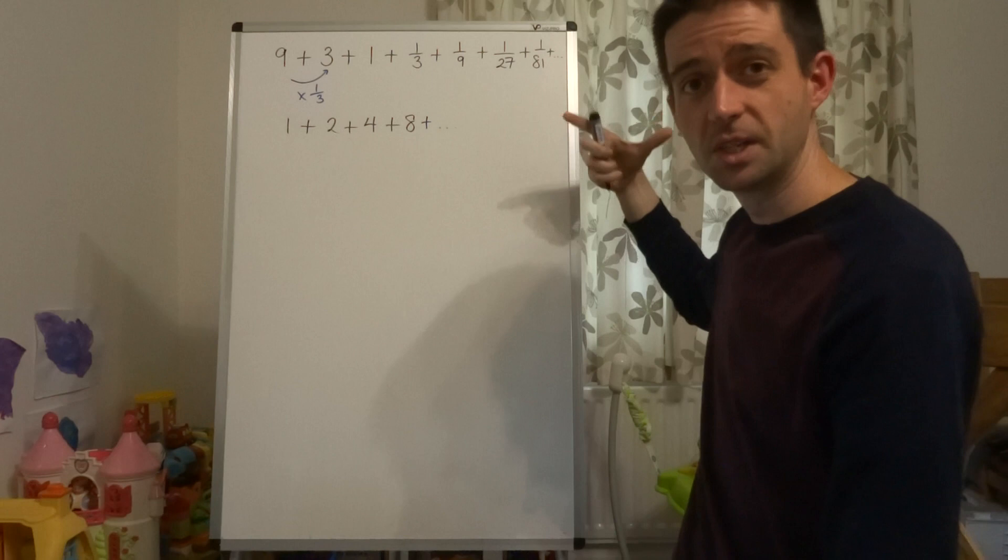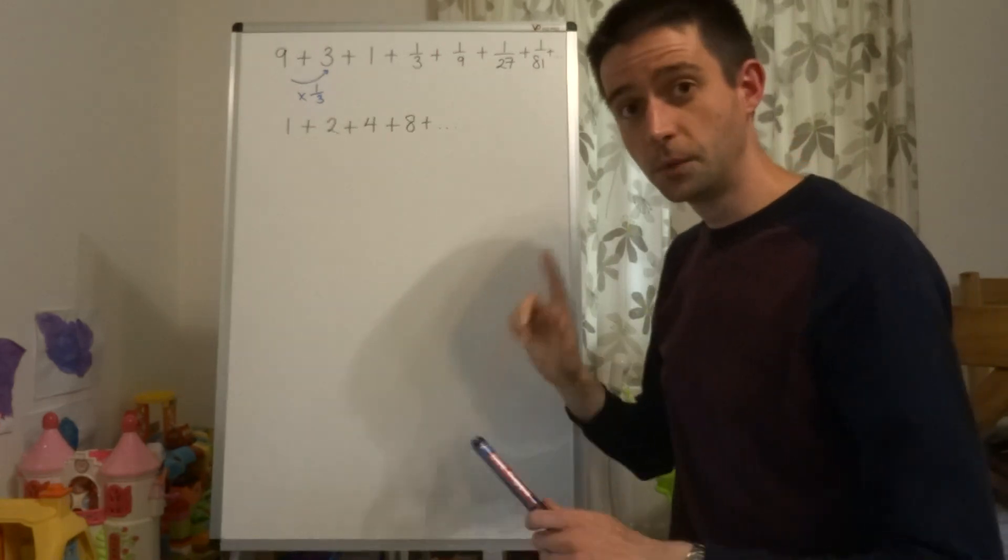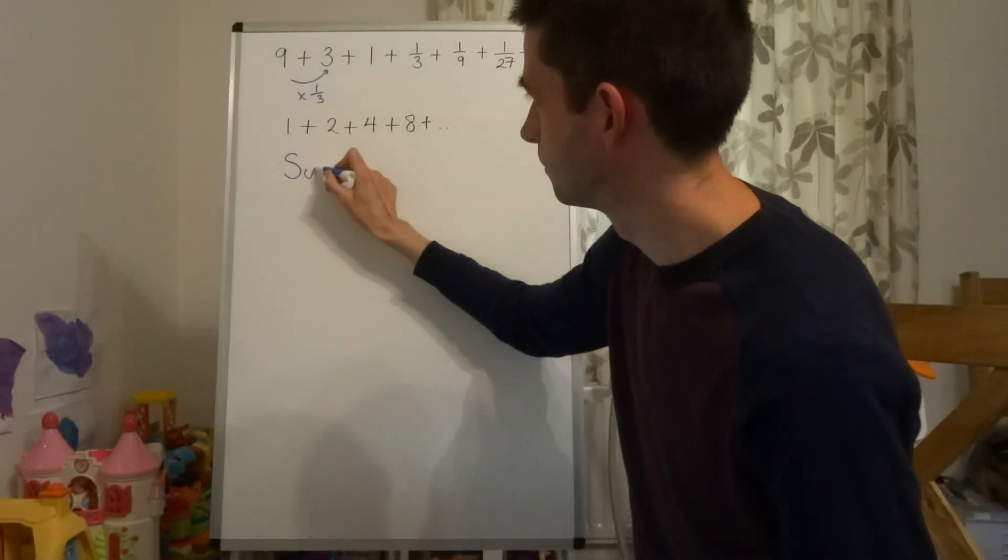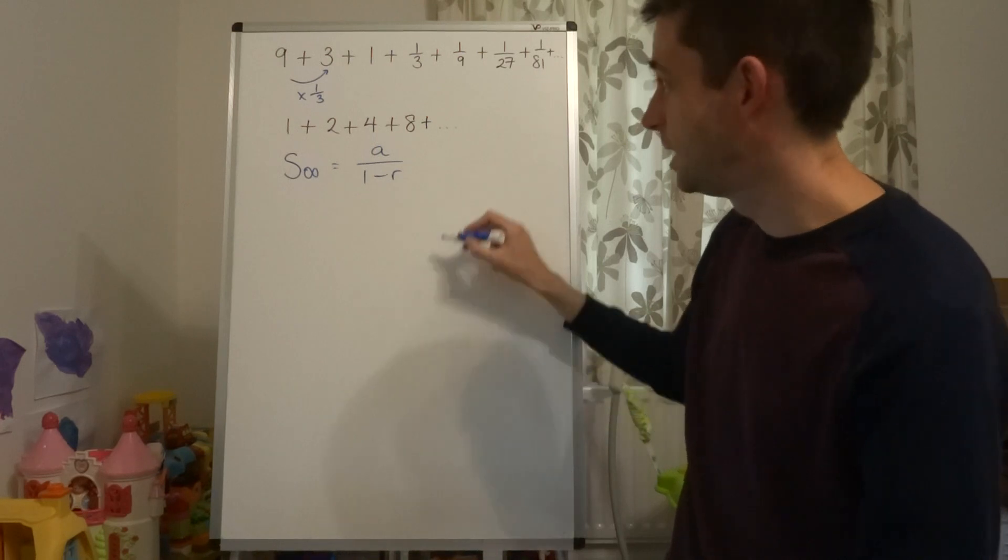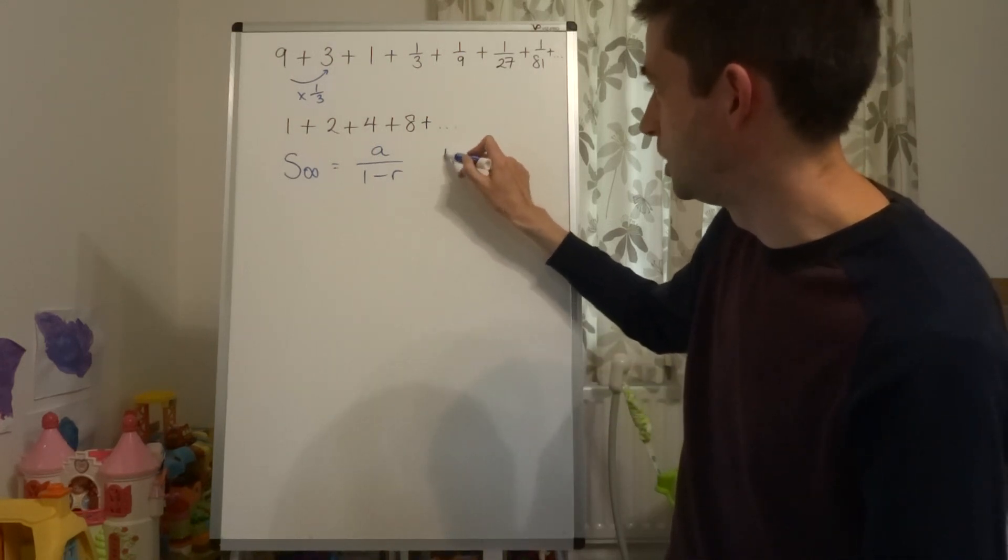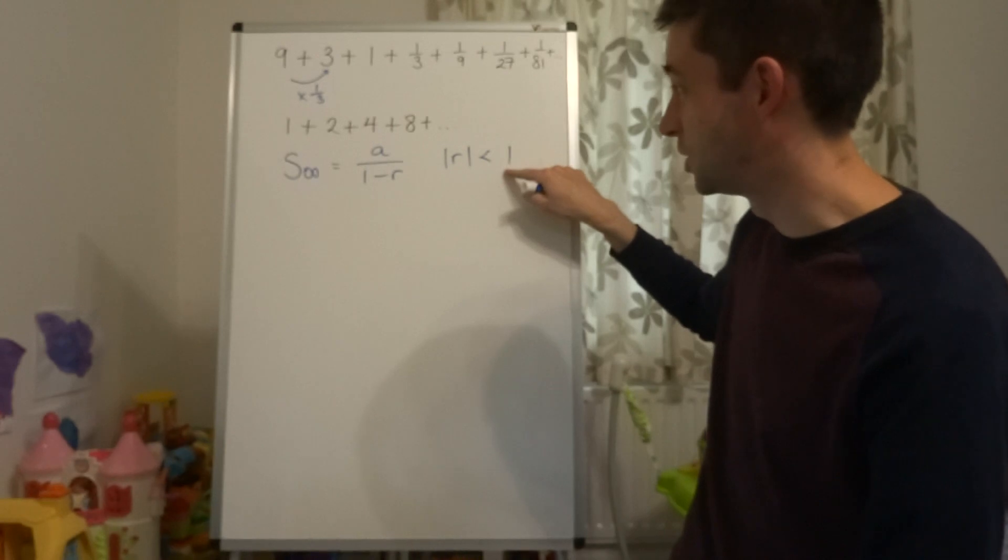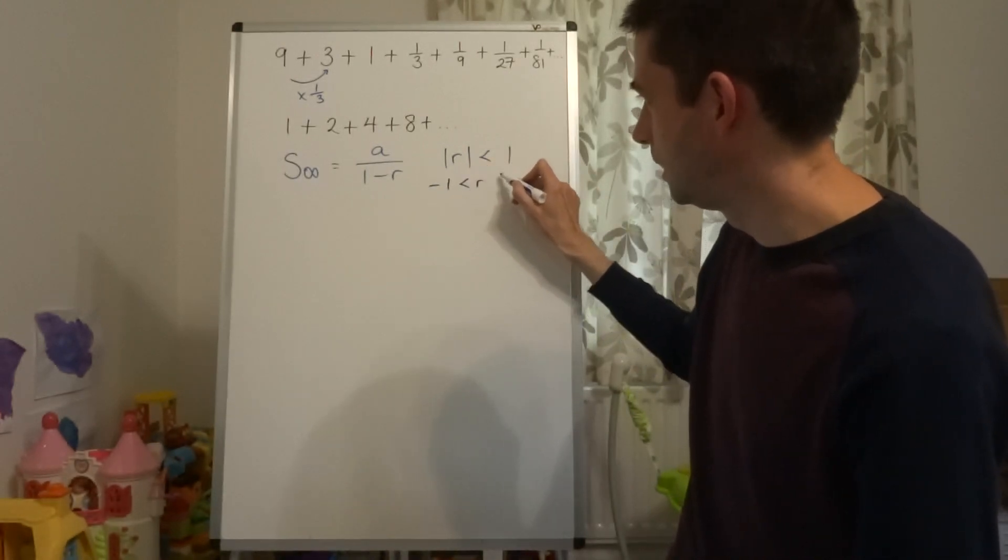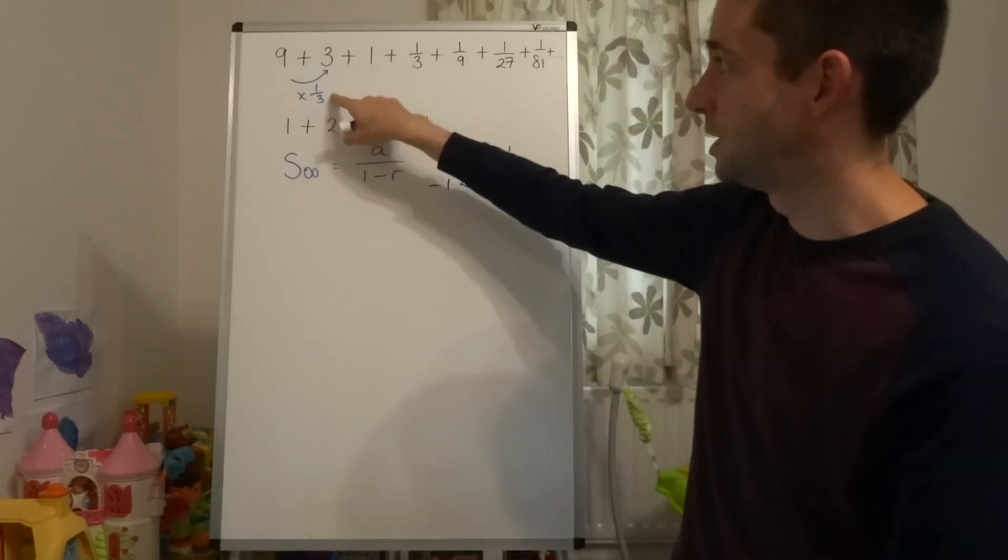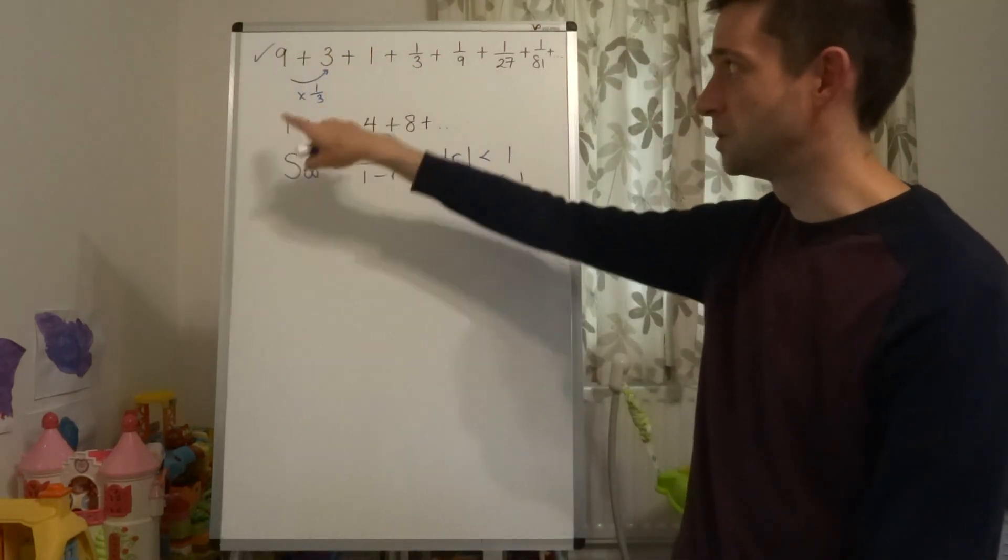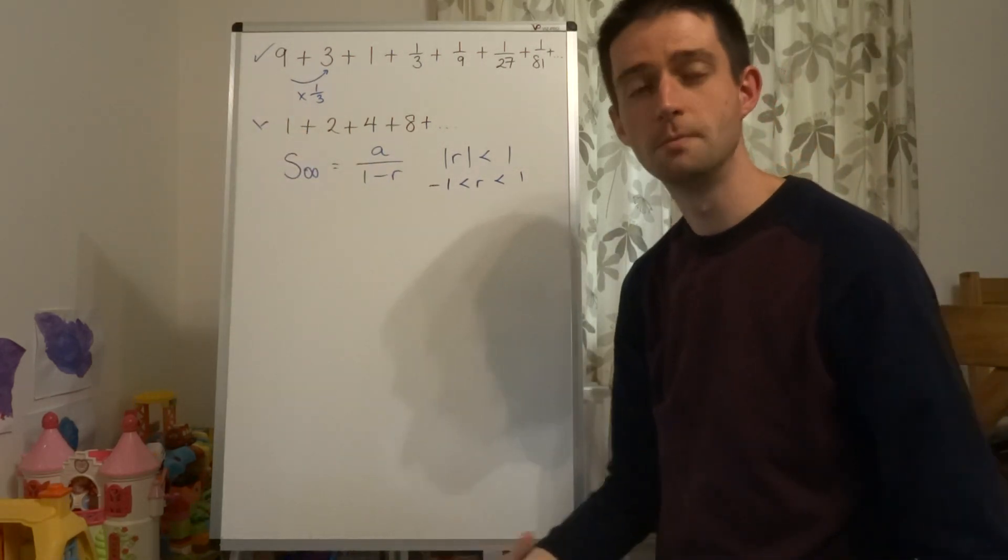Whereas this one here, the sum is going to get closer and closer to a given value. And we're going to explore how that works. Now, the rule for sum to infinity is a over 1 minus r. But crucially, r has to be what we actually write. We write that the magnitude of r has to be less than 1. What that actually means is that the value of r has to be between negative 1 and 1. Basically, it has to be a fraction. So this one is fine. This sequence, we would have a sum to infinity because r is 1 third. This sequence here, we would not have a sum to infinity because r would be 2, which is bigger than 1.